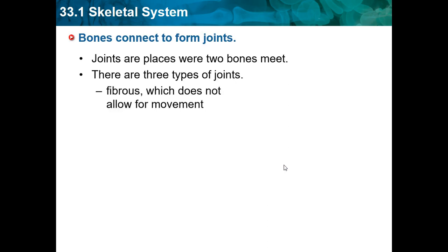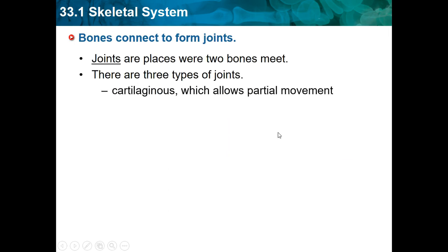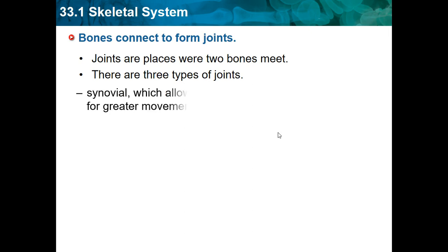There are three types of joints. There's a fibrous joint, which does not allow for movement — for example, in your skull, it just connects two pieces but you can't move. There's a cartilaginous joint, which allows partial movement. And there's a synovial joint, which allows for greater movement.